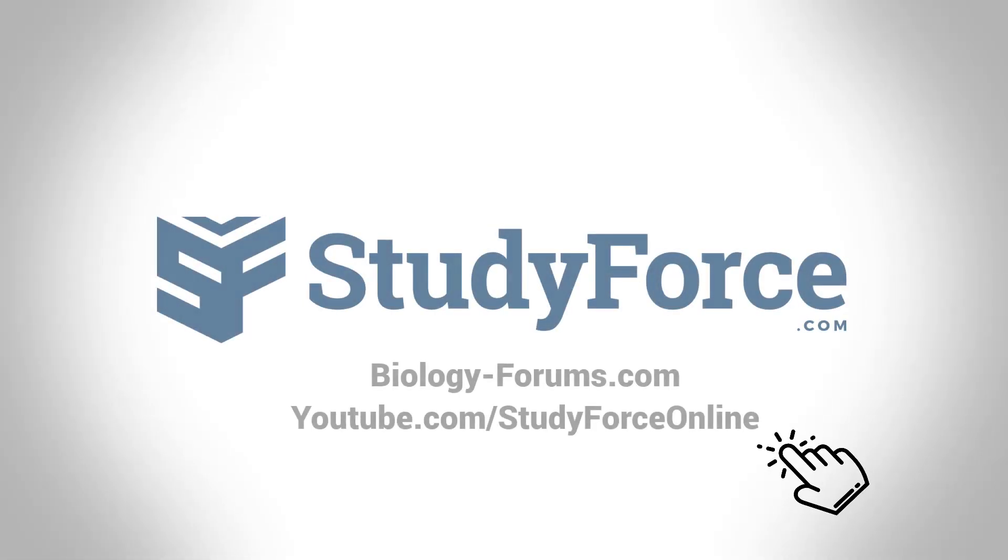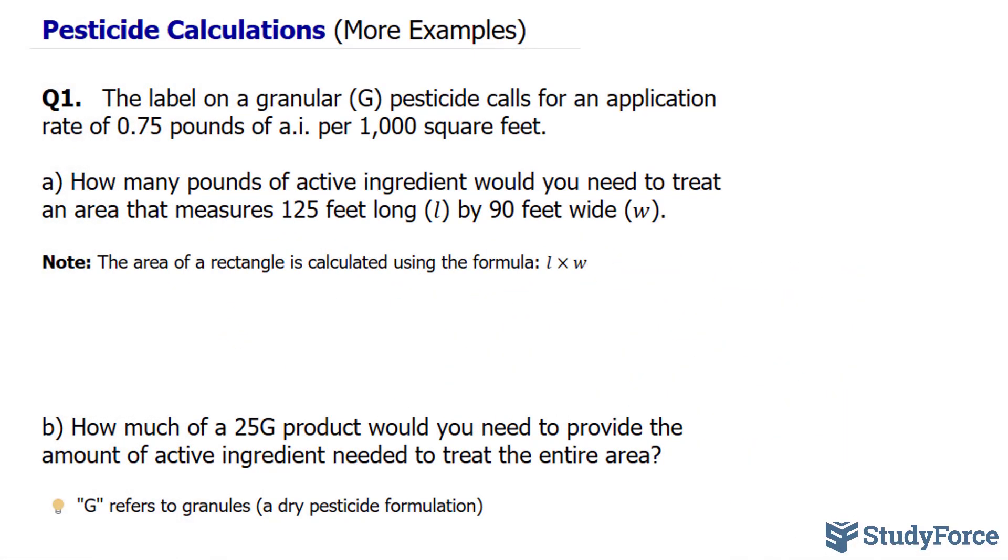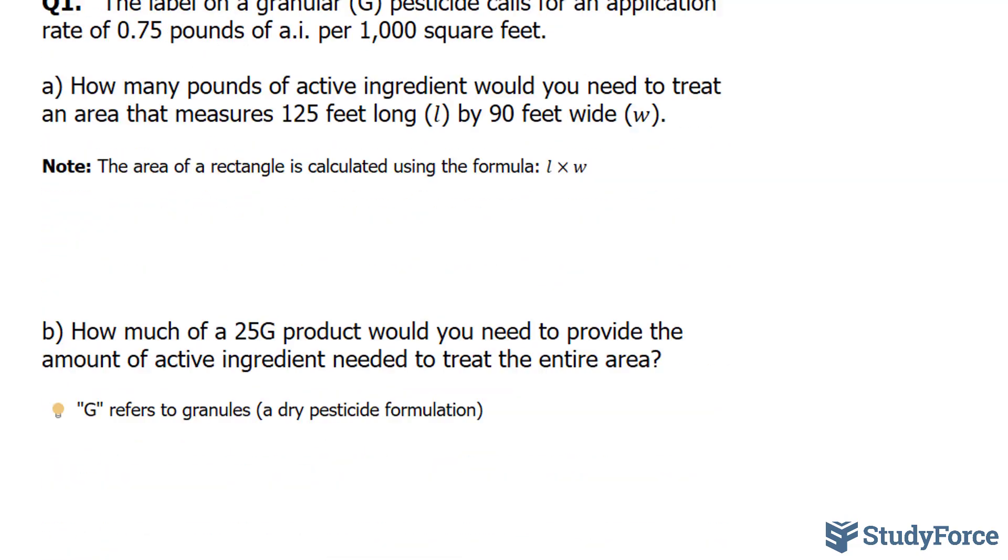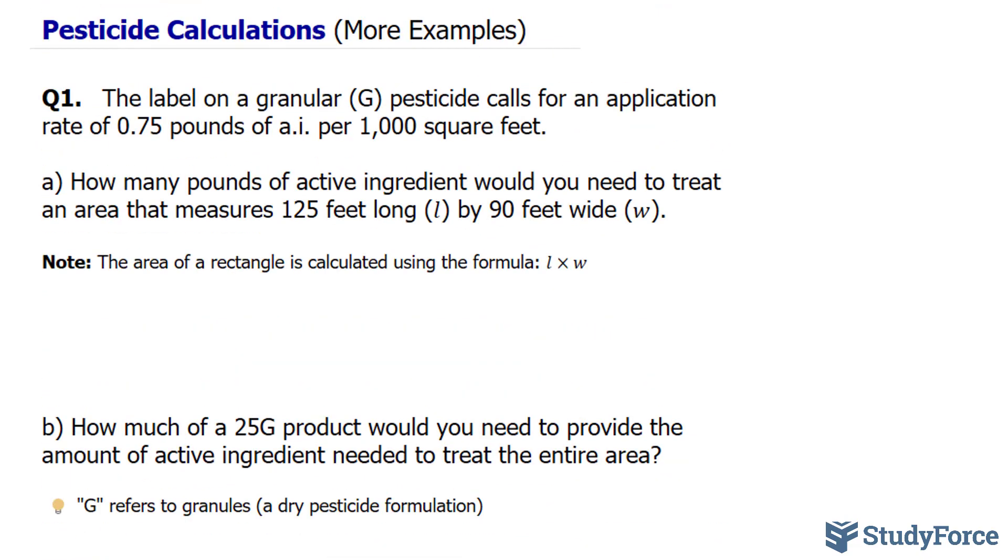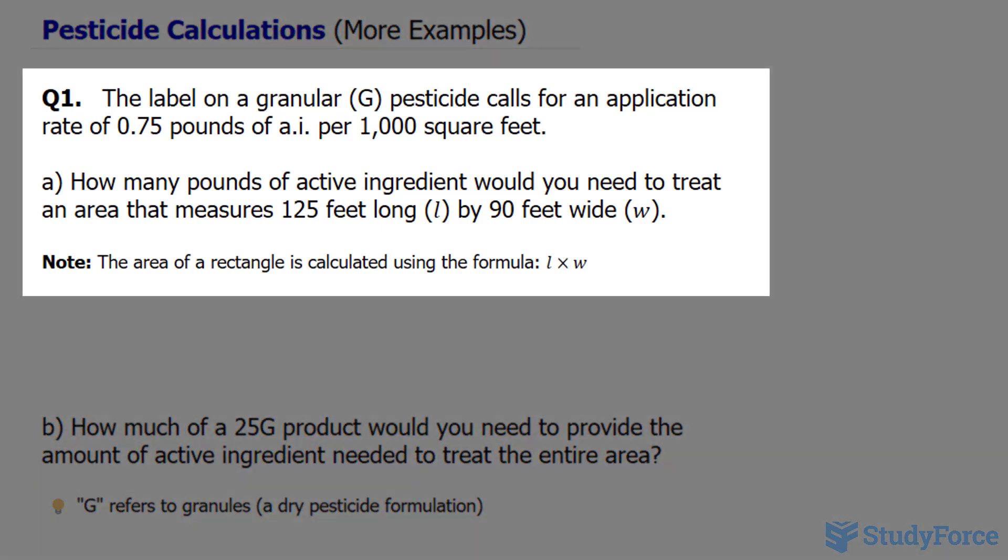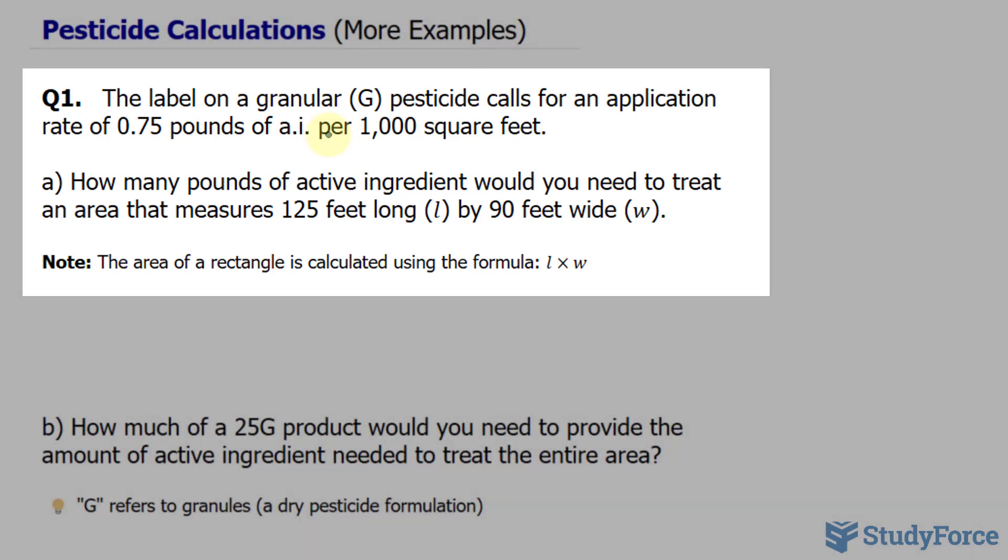Welcome back everyone to our lesson on pesticide calculations. I have prepared two more examples here. Let's get started with question number one. The question reads: the label on a granular pesticide calls for an application rate of 0.75 pounds of AI per 1,000 square feet. AI represents active ingredient. The first question asks, how many pounds of active ingredient would you need to treat an area that measures 125 feet long by 90 feet wide?